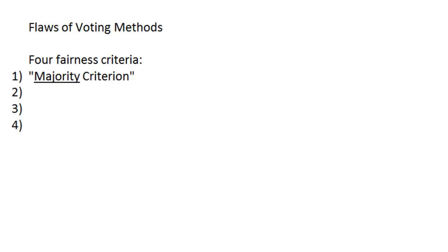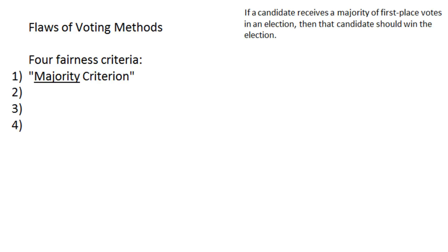The first one is called the majority criterion, and it states the following: if a candidate receives a majority of first place votes in an election, then that candidate should win the election. That makes sense — it's very similar to the plurality method, which says whoever has the most first place votes. The majority criterion is specifically about whichever candidate receives more than half of the total first place votes; that candidate should be the winner.